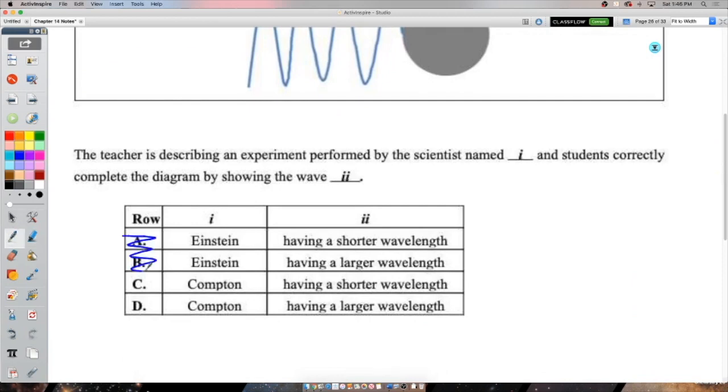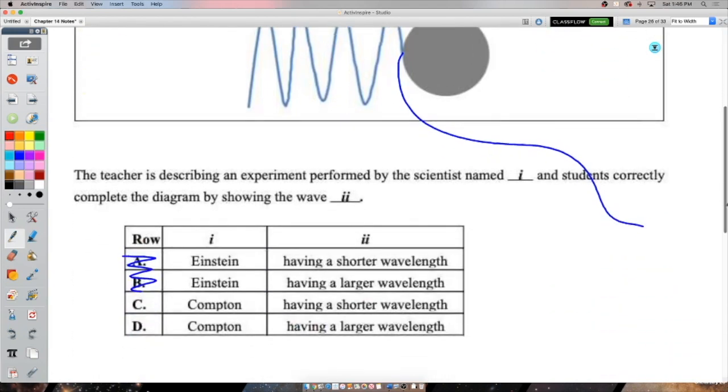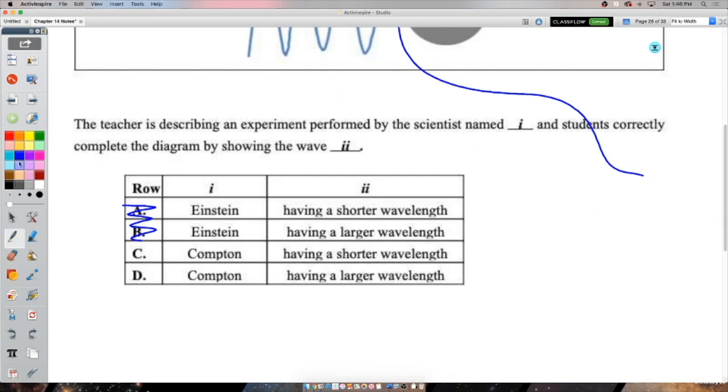And students correctly complete the diagram by showing the wave have a shorter wavelength or a larger wavelength. Well, we kind of just said it. But if it's going to impart momentum to the electron, because we know the electron is going to scatter off and p equals h over lambda, it can't, there's no free momentum. It can't just magically give the electron momentum. It has to give it its own momentum. It has to lose momentum. So losing momentum means larger wavelength. And so D is our answer.